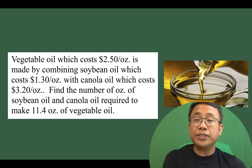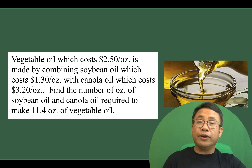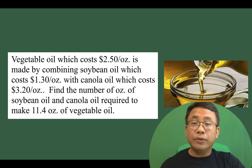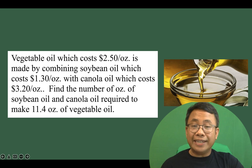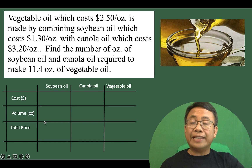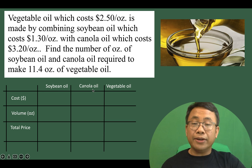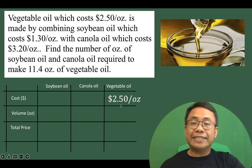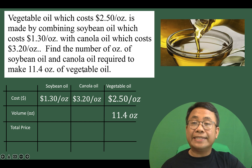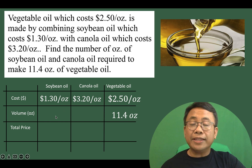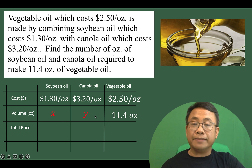Here's problem number 3. Vegetable oil, which costs $2.50 per ounce, is made by combining soybean oil costing $1.30 per ounce with canola oil costing $3.20 per ounce. Find the number of ounces of soybean oil and canola oil required to make 11.4 ounces of vegetable oil. Again, the strategy is to create a table. The resulting mixture is 11.4 ounces, but we do not know how much soybean oil and canola oil are used, so we let them be x and y respectively.